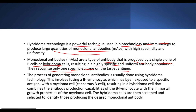We will be able to produce monoclonal antibodies using hybridoma technology. To do this, we fuse the two cells — we fuse the B-lymphocyte and myeloma cells together.